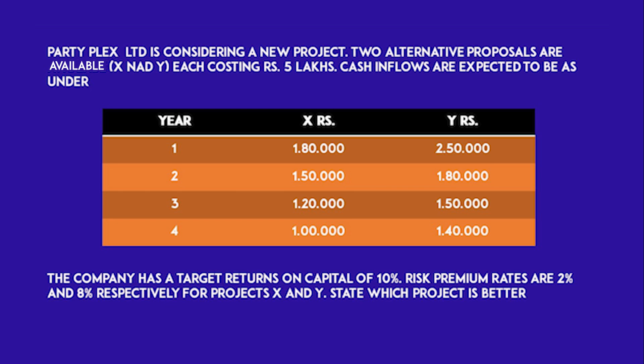Partiplex Limited is considering a new project. Two alternative proposals are available: X and Y, each costing rupees five lakh. Cash inflows for Project X are: Year 1 – 1,80,000; Year 2 – 1,50,000; Year 3 – 1,20,000; Year 4 – 1,00,000. For Project Y: Year 1 – 2,50,000; Year 2 – 1,80,000; Year 3 – 1,50,000; Year 4 – 1,40,000. The company has a target return on capital of 10%, and risk premium rates are 2% for Project X and 8% for Project Y. Which project is better?